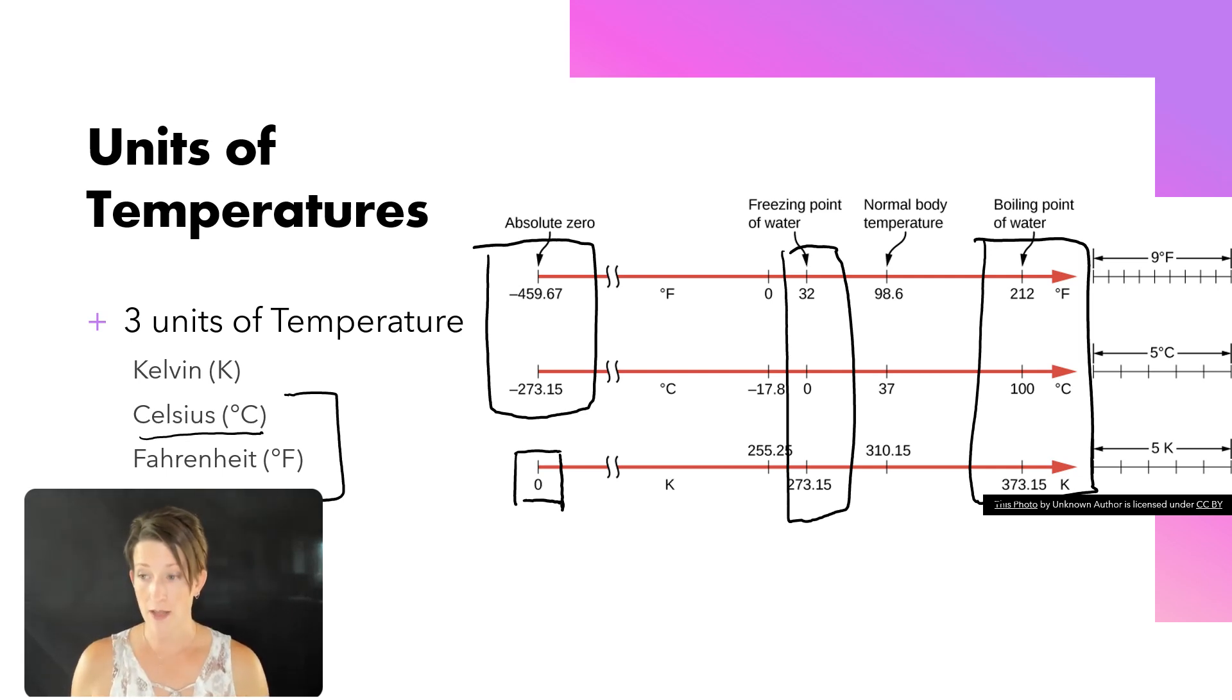If you look on the scale on the left, you can see where our conversion factors are. Kelvin and Celsius changed by the same increment. They're just off by 273. But one change in Celsius is one change in Kelvin. That is not true for Fahrenheit.